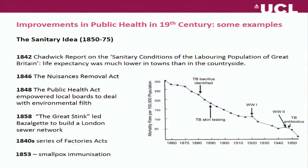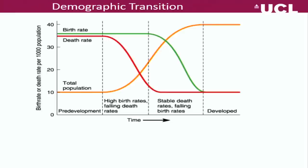There were also a series of Factory Acts which tried to improve health and safety, and compulsory immunisation for smallpox. The combination of these public health improvements reduced death rates and triggered a global demographic transition, which is shown in this stylised diagram.